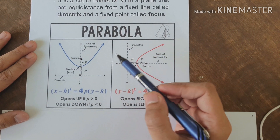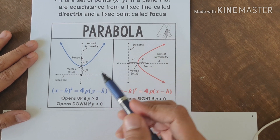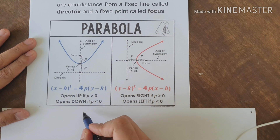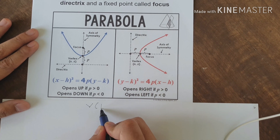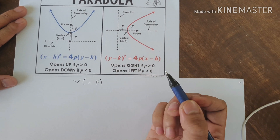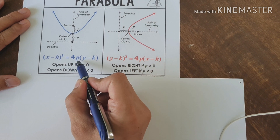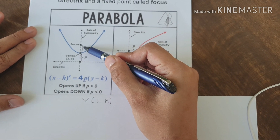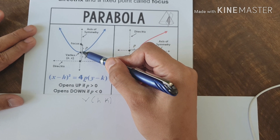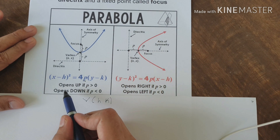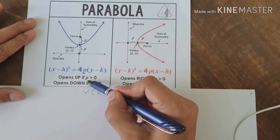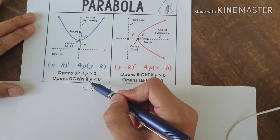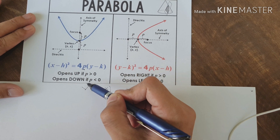Always remember: if the parabola opens upward and downward, we are using (x minus h) squared equals 4p times the quantity (y minus k), where the vertex is (h, k) and p is what we call the latus rectum — the distance between the focus and vertex. If the parabola opens upward, p is greater than zero. If the parabola opens downward, p is less than zero.